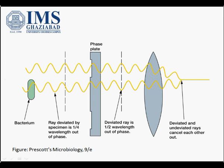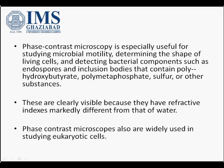In another diagram using bacteria as the specimen, the ray passing through the sample is deviated by 1/4 wavelength, while the undeviated ray misses the specimen, passes through the phase plate, and is advanced by 1/4 wavelength. This makes the two rays 1/2 wavelength out of phase, so they cancel out each other.